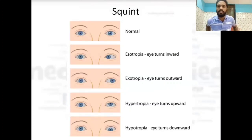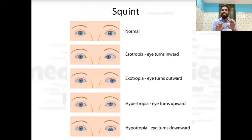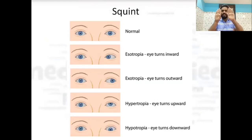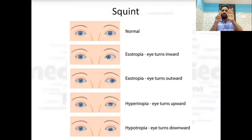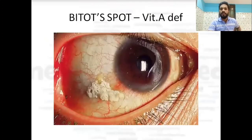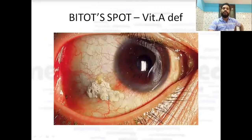In squint: if the eye turns inward it is esotropia; if the defective eye goes outward it is exotropia; upward deviation is hypertropia; downward deviation is hypotropia.